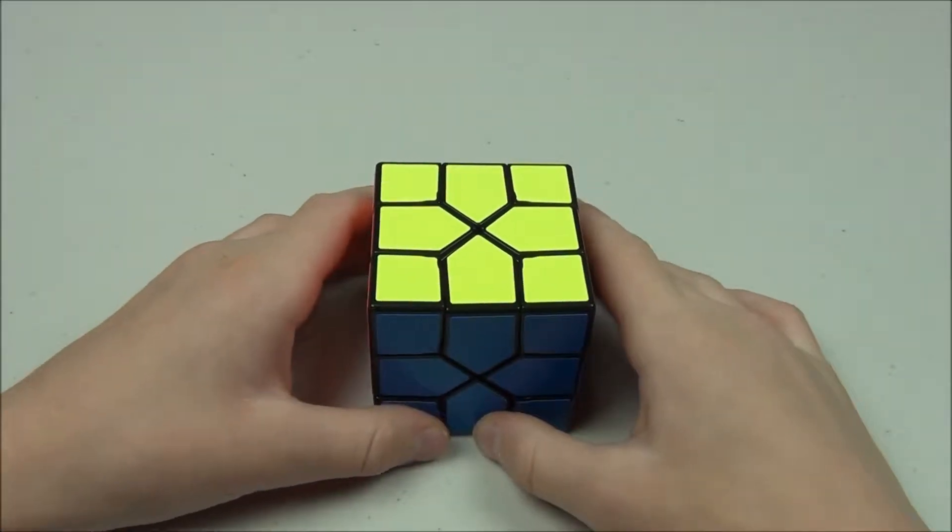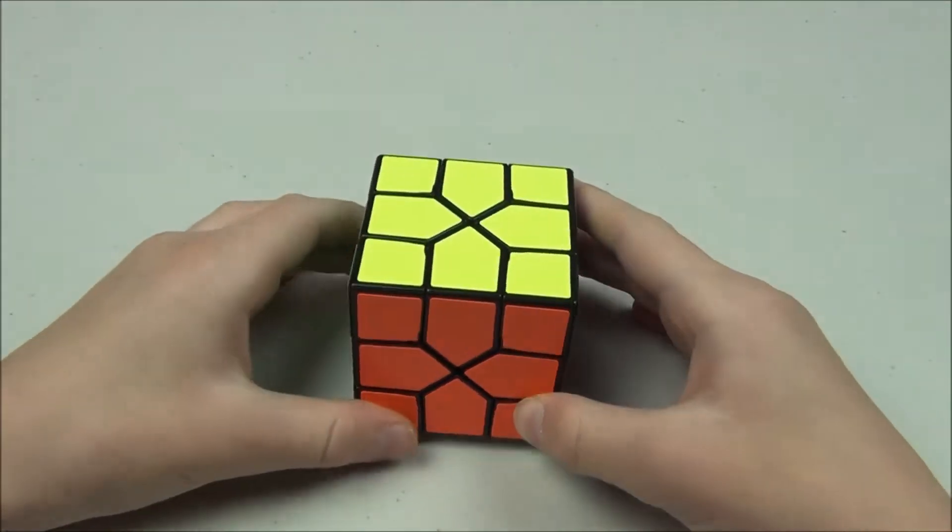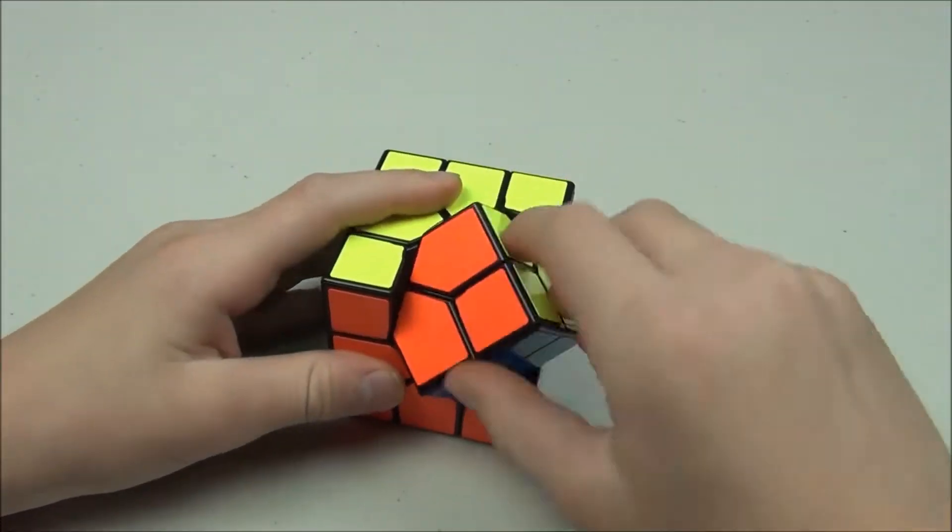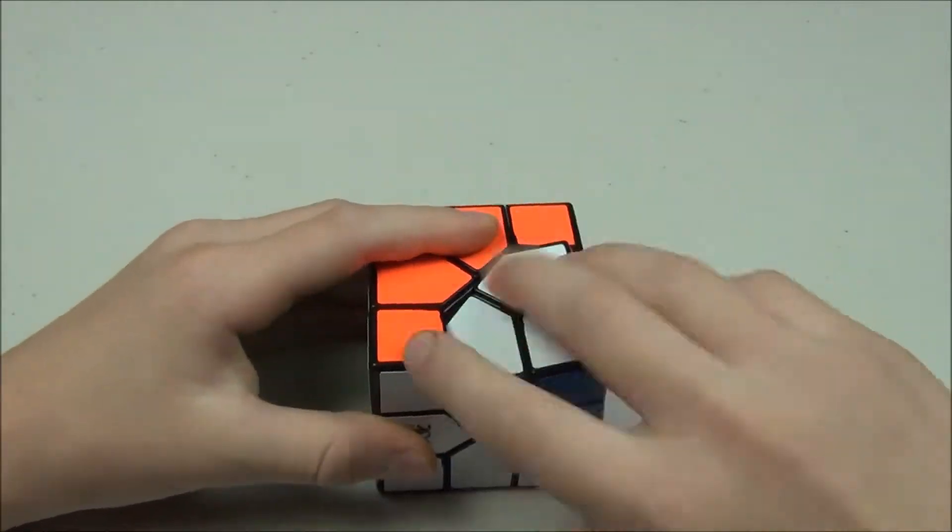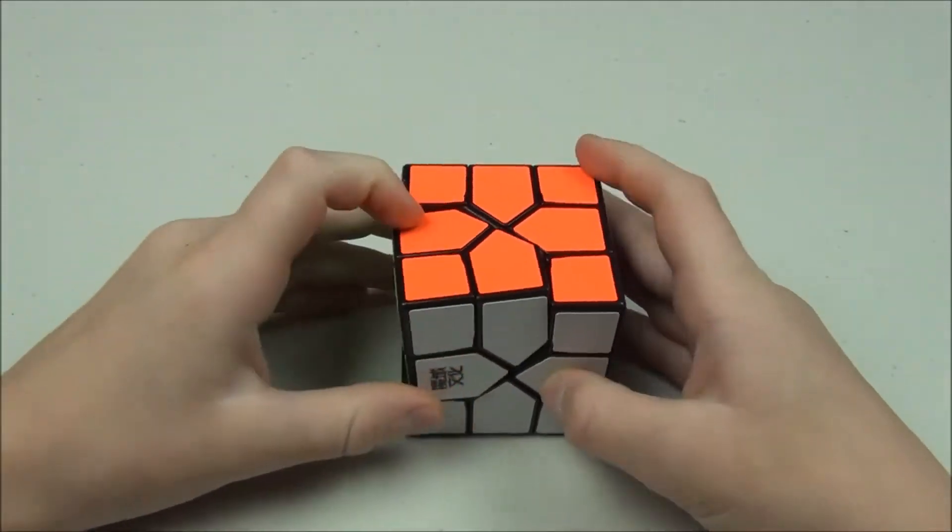Now Oscar Van Deventer designed this puzzle, and it was mass-produced by Moyu in 2017. This is a corner-turning puzzle, and it is very similar to the Dino Cube. The puzzle is very easy, and I solved it in just a few minutes after I got it.